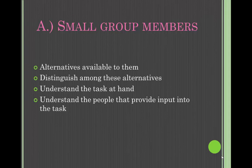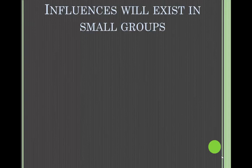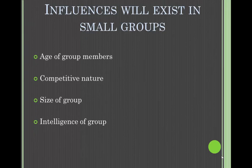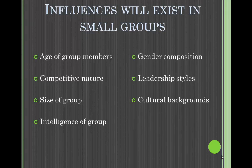First, the small group members. They continue to understand that many alternatives are available to them. They distinguish among these alternatives, understand the task at hand, and understand the people who provide input into the task. However, there are some influences that exist in small groups: the age of the members, the competitive nature of members, the size of the group, the intelligence of members, the gender composition, the leadership styles, and the cultural backgrounds.